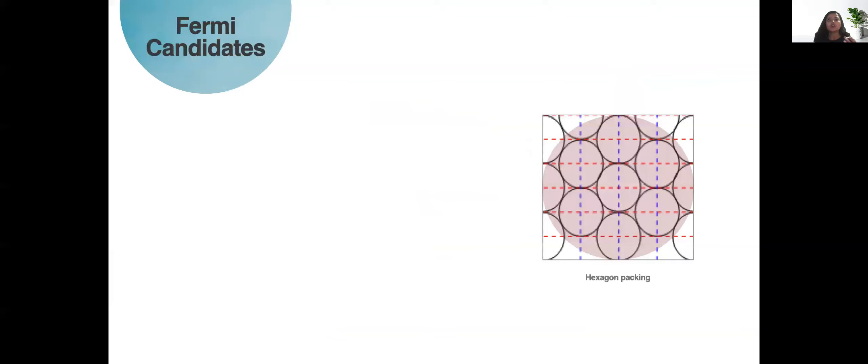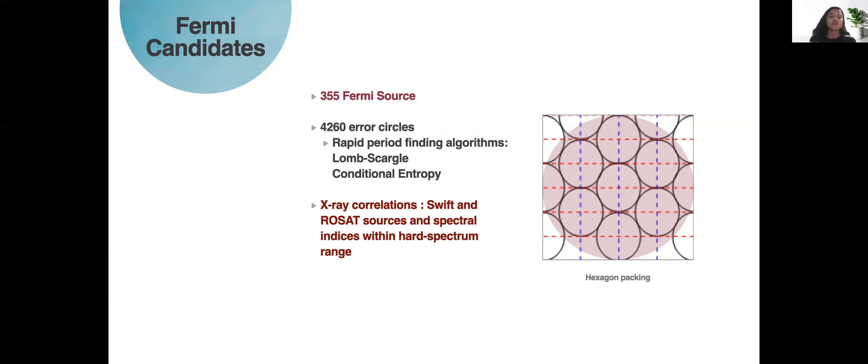Currently this is what we've done. We have looked at about 355 Fermi sources and because Fermi has much larger error circles we have broken up those error circles by using something called as a hexagonal packing and launched rapid period finding algorithms such as Lomb-Scargle or conditional entropy to seek out if there are any periodicities present in optical data sets in these Fermi circles. We have also used x-ray correlations by using large scale available data sets from Swift and ROSAT and checked their spectral indices to only find hard spectral sources within these ranges and we have some really interesting potential candidates that we are looking at right now.